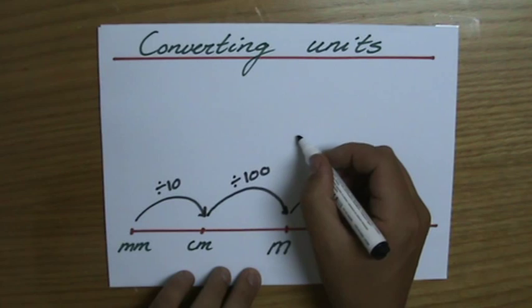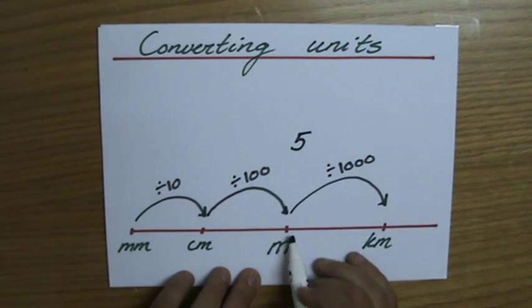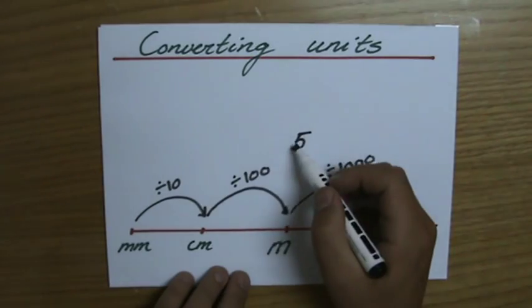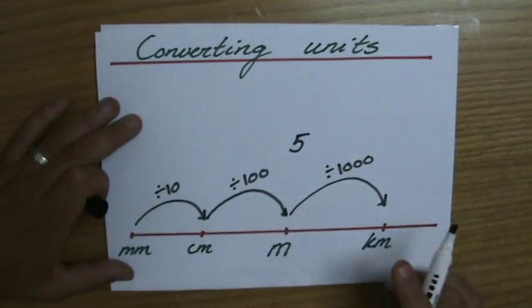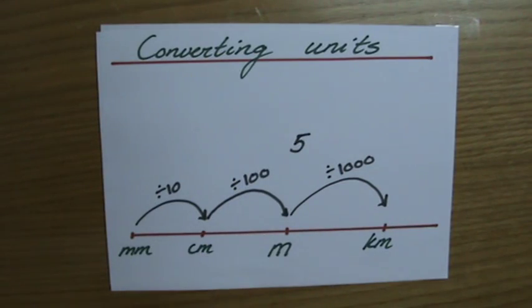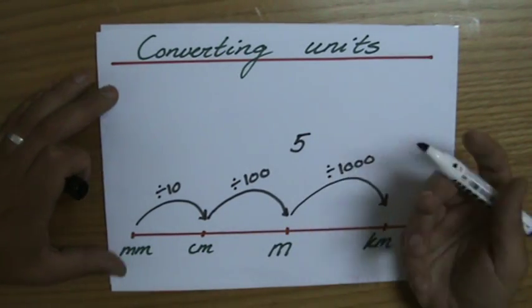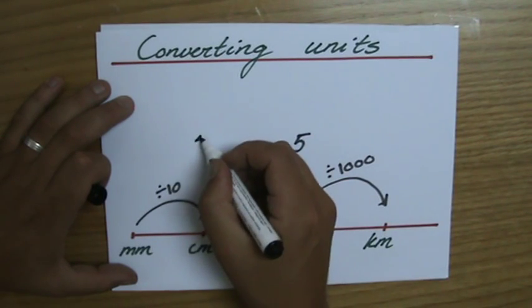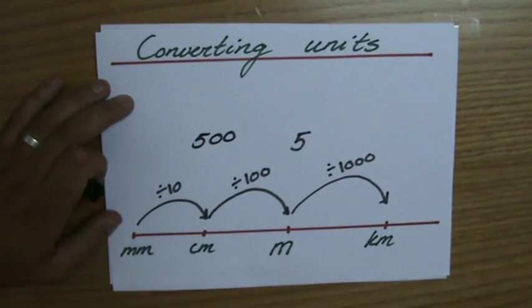have 5 meters—if I stand here on the number line on meters—how many centimeters would that be? Now I'm going the other way. I'm going from a big unit to a smaller unit, so 5 meters, that's going to be 500 centimeters. Because if I go the other direction